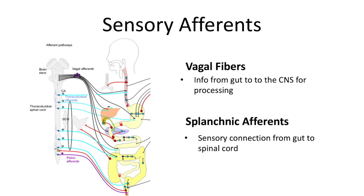Sensory information is transmitted from the GI tract to the brainstem and spinal cord via vagal and spinal afferents. This includes the splanchnic and pelvic pathways. Afferents are involved in vomiting, nausea, feeding and satiety, but also in pathophysiological visceral pain.